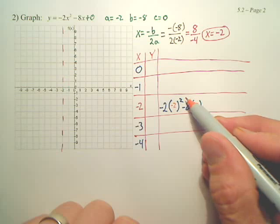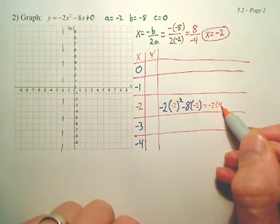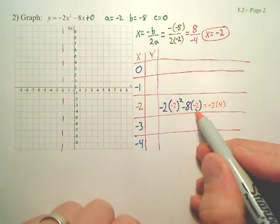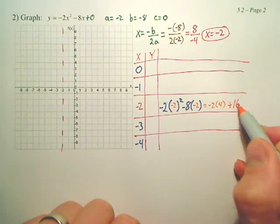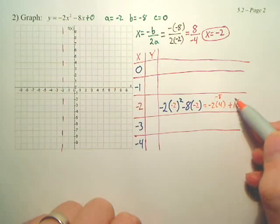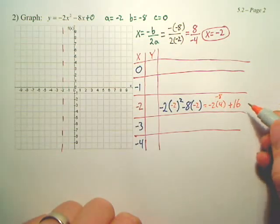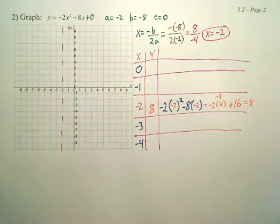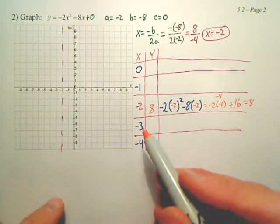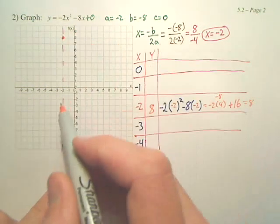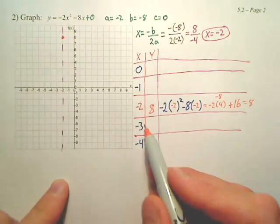Whatever you get is going to go right there for y. So, negative two squared is four. Leave the negative two. And negative eight times negative two is positive 16. This is negative eight. So, what's negative eight plus 16? That's eight. Negative two, eight is right here. Over negative 2, up 8. That's a coordinate.